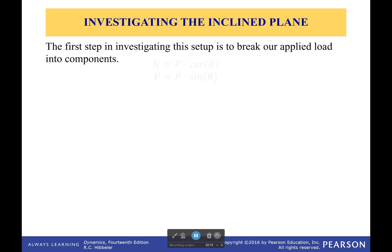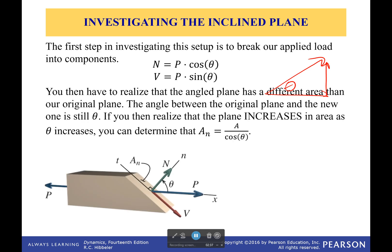So, the first step in investigating this setup is to break our applied load into components, which isn't that terribly difficult to do. You've done it so many times before. You have some sort of angled vector. You find the parallel component and the normal component, and you can use theta to figure that out. And depending on which angle you use, you'll get these cosine theta or sine of theta. So, just look at how you've drawn it, and you'll go from there.